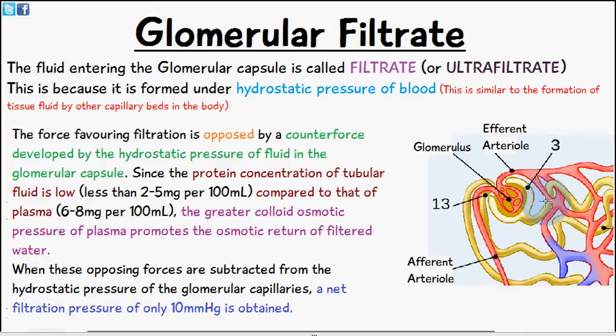Since the protein concentration of tubular fluid, the tubular fluid which is located along the nephron, is low, less than 2-5 milligrams per 100 milliliters compared to that of the plasma in the arterial or glomerular capillaries, which is 6-8 milligrams per 100 milliliters, the greater colloid osmotic pressure of plasma promotes the osmotic return of the filtered water.